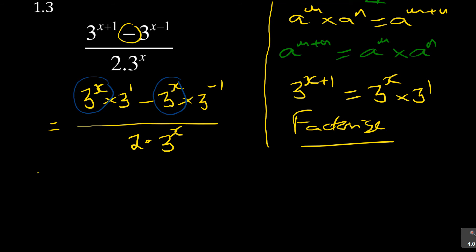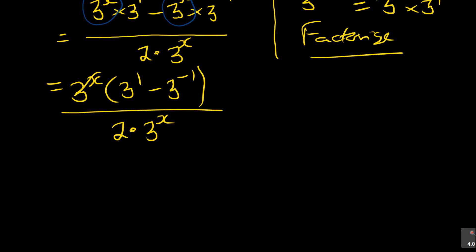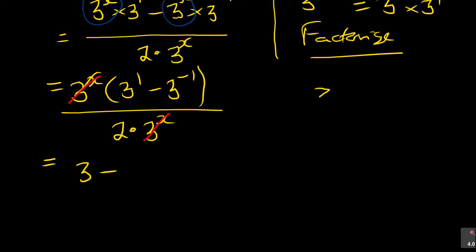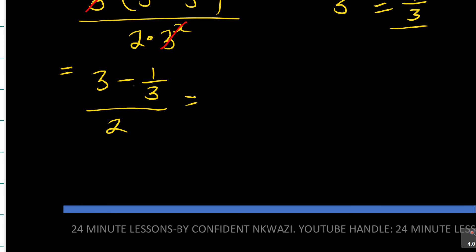On top, 3 to the power x is common in both terms. Factorize it out — that cancels the 3 to the power x in each term, leaving 3 to the power 1 minus 3 to the power negative 1, all over 2 times 3 to the power x. Then cancel 3 to the power x from numerator and denominator. Now 3 to the power negative 1 equals 1 over 3, so what remains is 3 minus 1 over 3, all divided by 2.